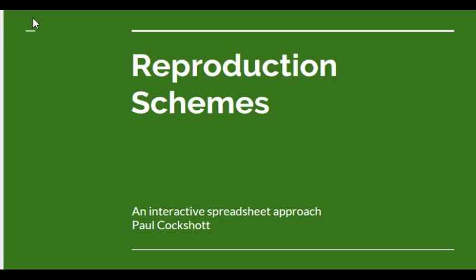Today I'm going to be talking about Marx's reproduction schemes. These were introduced in volume 2 of Capital, which is probably the least read volume. They are a very innovative set of ideas for their time and provide the basis of what later became called input-output tables or input-output analysis. You can analyse and demonstrate a lot of macroeconomic relationships using these reproduction schemes.